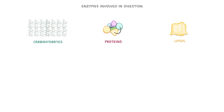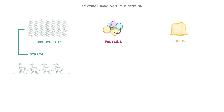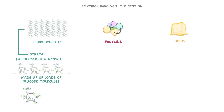If we start with carbohydrates, most of the carbohydrates that we eat, from foods like pasta and potatoes, are in the form of starch, and starch is a polymer of glucose. So it's a really long molecule, made up of loads of glucose molecules, which in this case we can call the monomers.